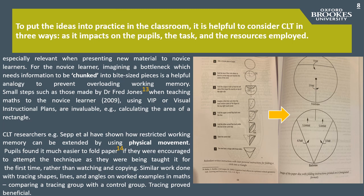For the novice learner, imagining a bottleneck which needs information to be chunked into bite-sized pieces is a helpful analogy to prevent overloading working memory. Small steps — such as those made by Dr Fred Jones when teaching maths using VIP or visual instructional plans — are invaluable, such as breaking down the method of calculating the area of a rectangle. CLT researchers such as Sepp et al. in 2019 have shown how restricted working memory can be extended by using physical movement. Pupils found it much easier to learn how to tie knots or fold paper if encouraged to attempt the technique as they were being taught, rather than merely watching a demonstration and then copying after.